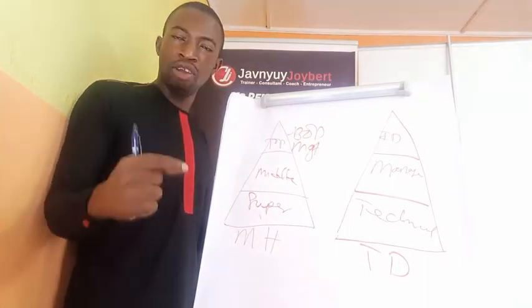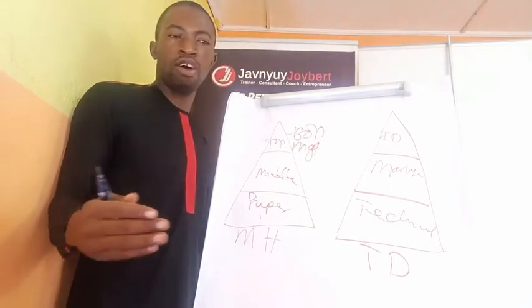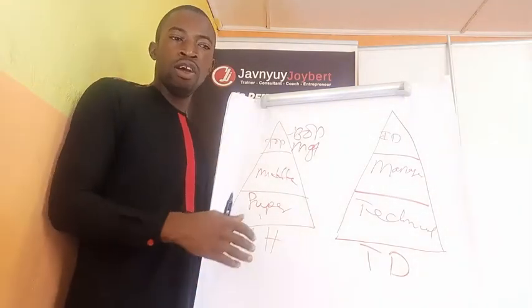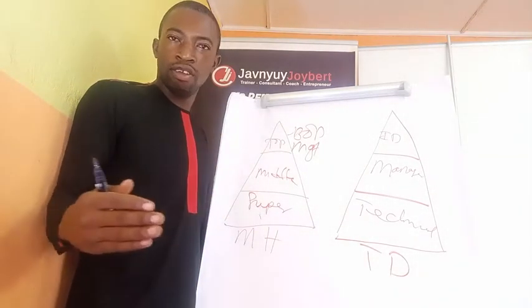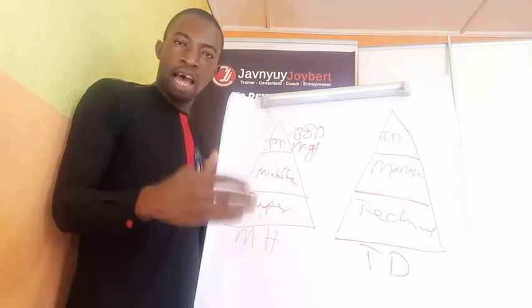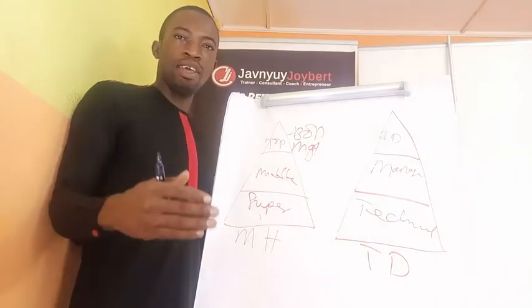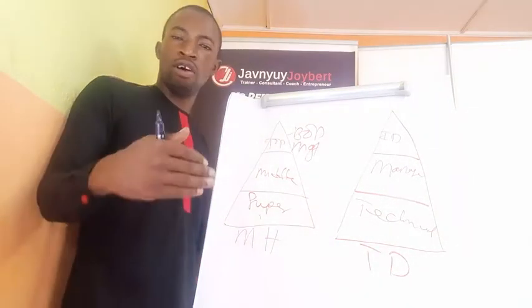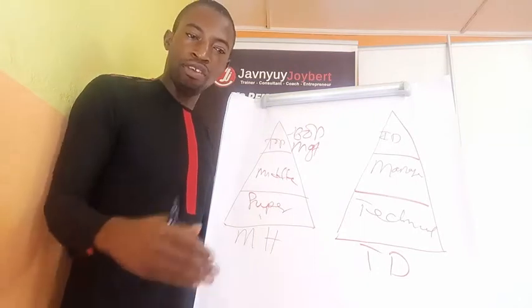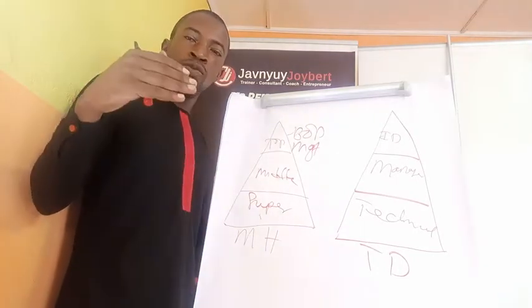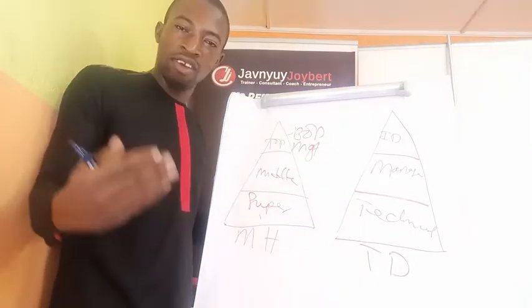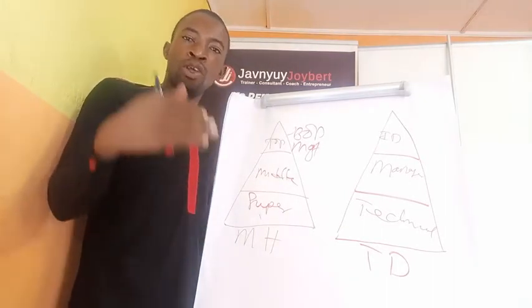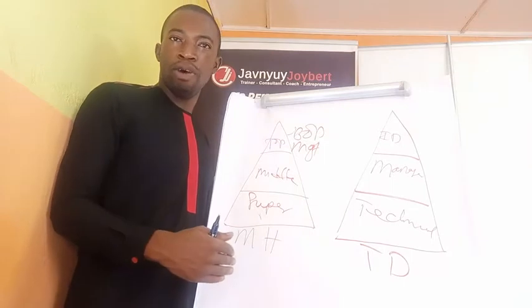Step seven: plan and execute. Don't just make a decision and don't practice decision paralysis — have a plan and an execution strategy. Step eight: take follow-up action. Follow up to see the impact of that decision in the business, in the department, and against the key performance indicators you had in mind when making that particular decision.